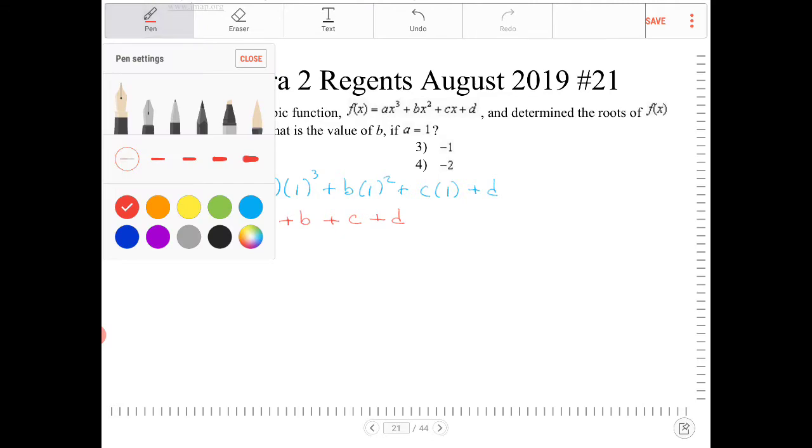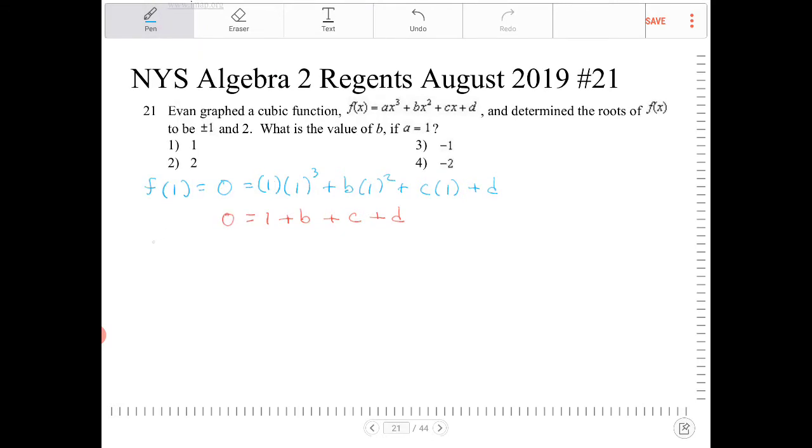And I will repeat this with the second root, which is negative 1. So, if I pop in negative 1 into the function, again, I will end up with the function evaluating to 0.